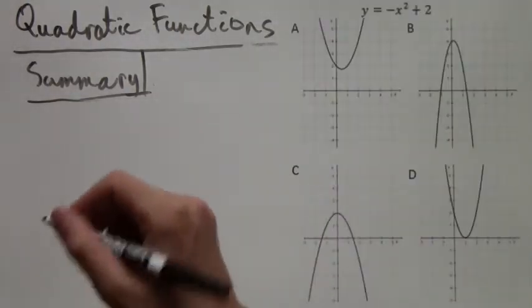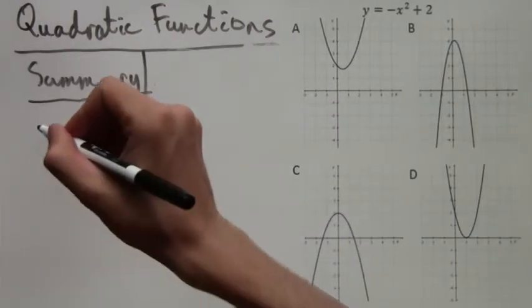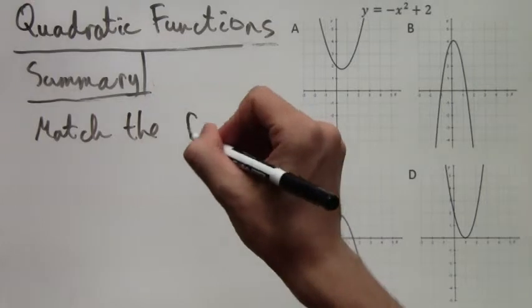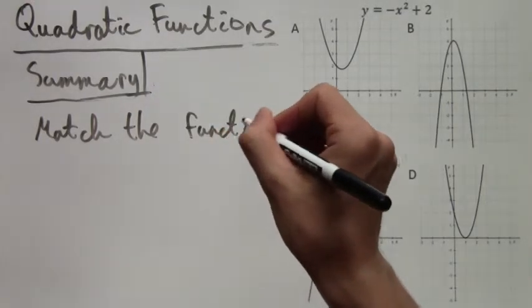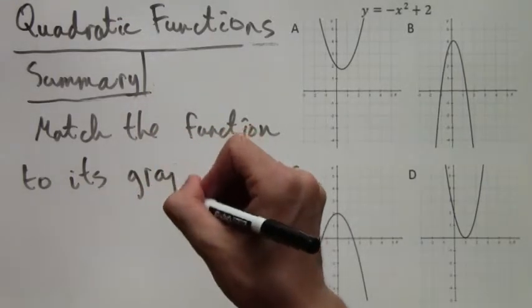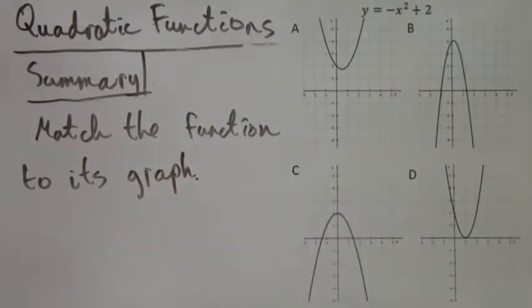Now we're going to do sort of the reverse problem. You're given the formula, the function y equals negative x squared plus 2, and there are four graphs. Which one of these graphs is the parabola of y equals negative x squared plus 2?